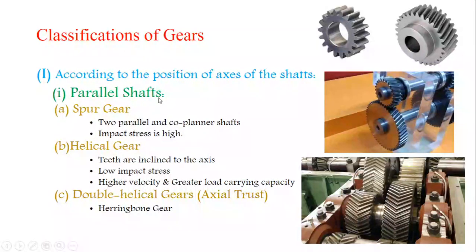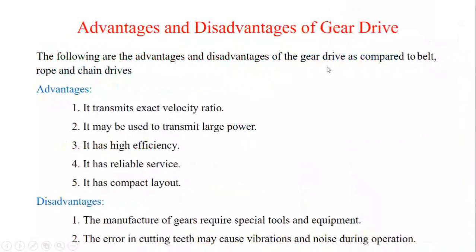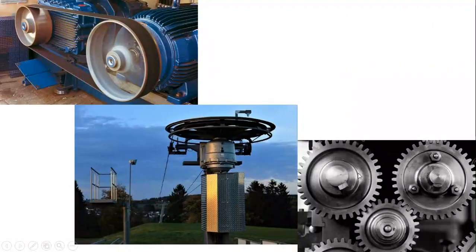First, according to the position of axis of the shaft. The first type is parallel shaft. Parallel shaft means both shafts are arranged in parallel position. This kind of arrangement is called parallel shaft. For example, the spur gear arrangement — both the shafts are in a parallel arrangement.